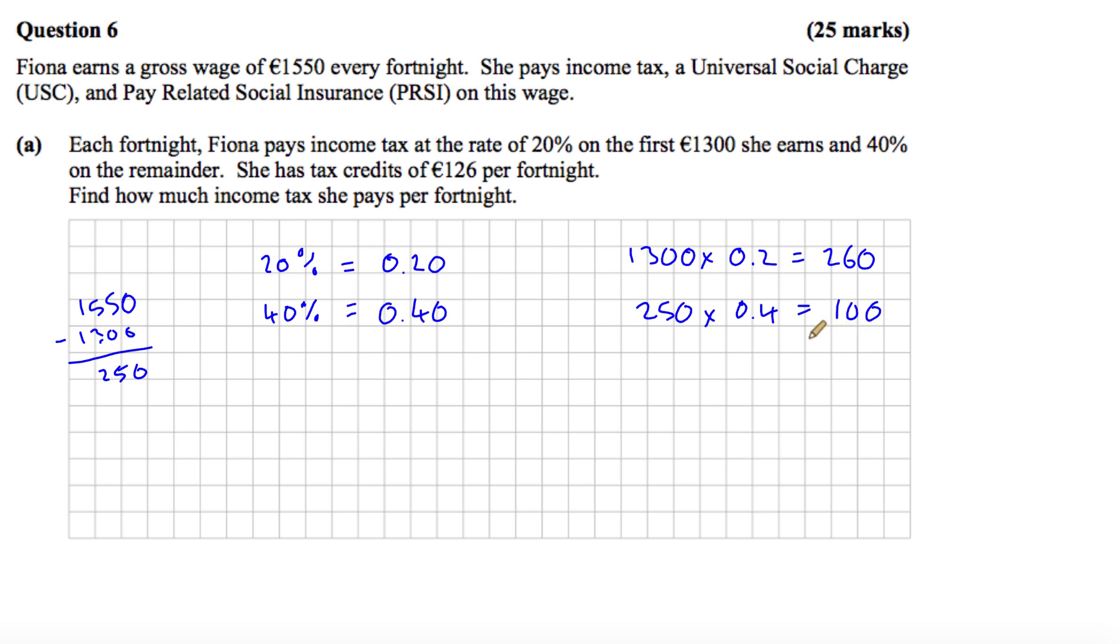So if we add those two taxes together, that gives us €360 that she pays in income tax. However, she has tax credits of €126. So she doesn't have to pay tax on that. So that comes off. If we subtract €126 from the €360, that leaves €234 in income tax.